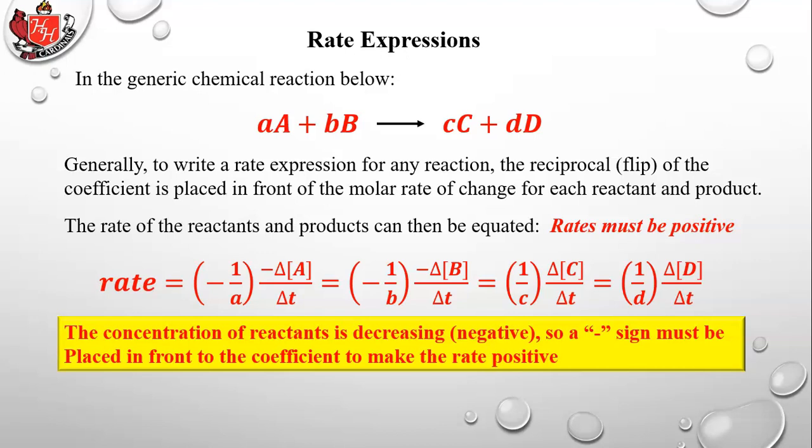The concentration of reactants is decreasing and therefore negative, so a negative sign must be placed in front of the coefficient to make the rate positive — and that's only for the reactants.